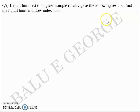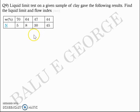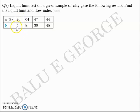The next question: the liquid limit test using Casagrande's apparatus on a given soil sample of clay gave the following results — find the liquid limit and the flow index. Water content versus number of blows is given: for water content 70%, the number of blows was 5, and for 44%, the number of blows was 45. As you increase the water content, the number of blows required decreases — w and n are inversely proportional.